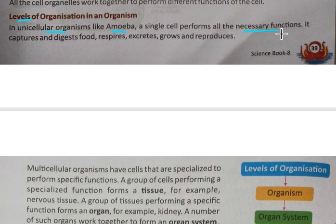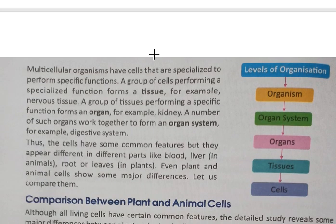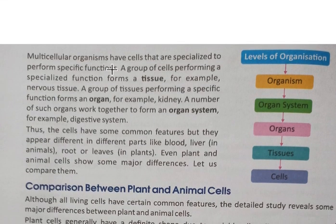The unicellular organism performs all functions and work — it can eat, capture and digest food, carry out respiration, and excrete. In multicellular organisms, there are more cells that have specialized functions for different tasks such as respiration and digestion.